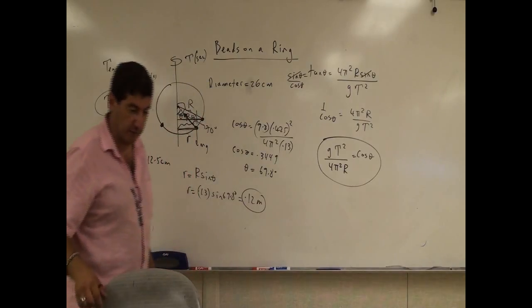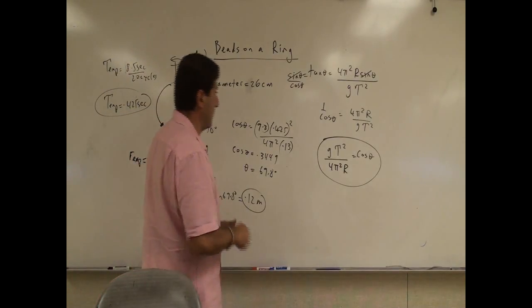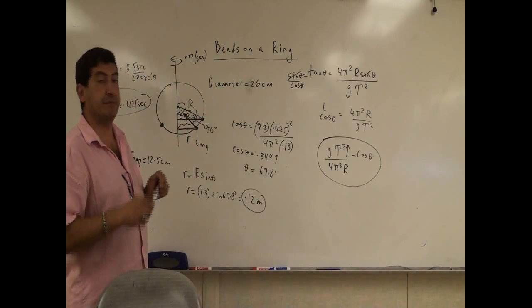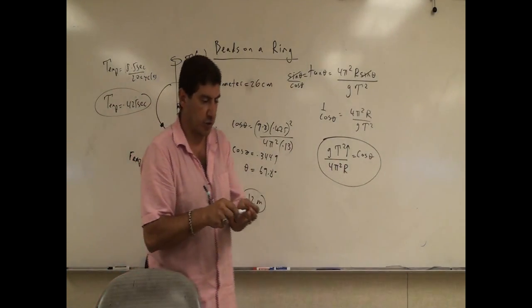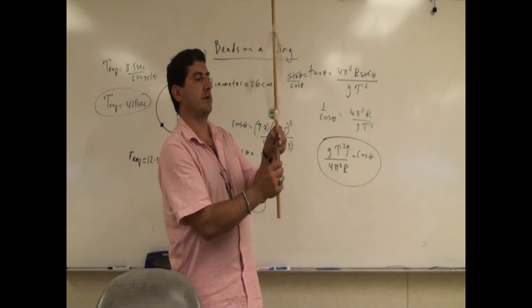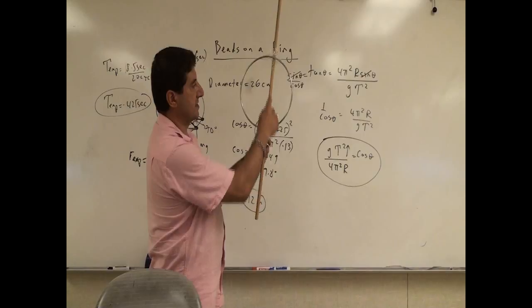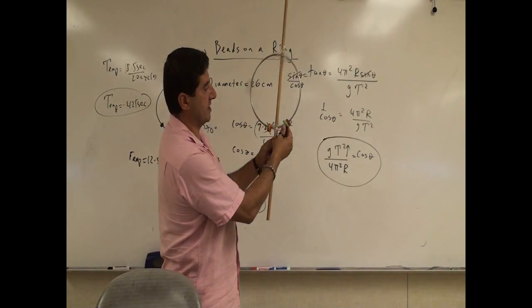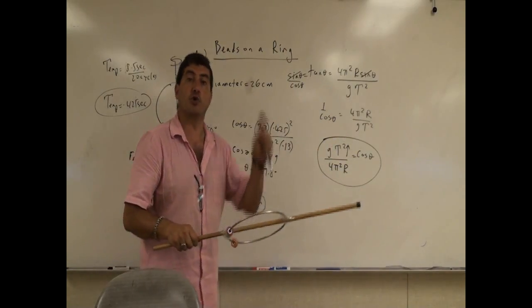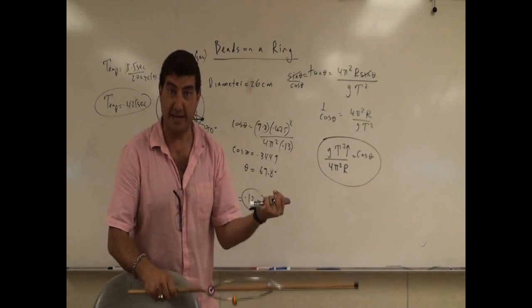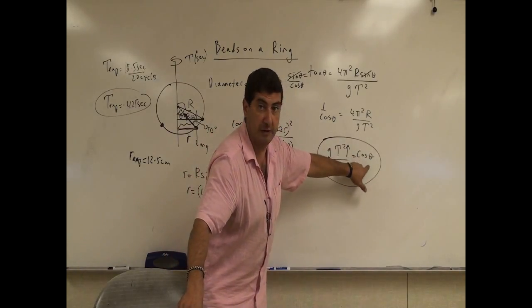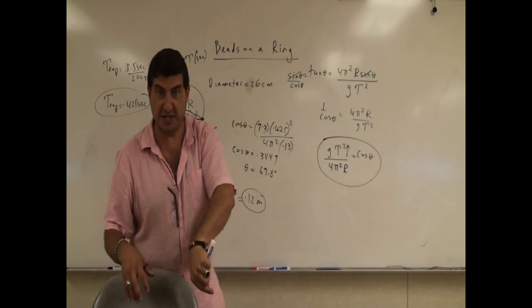So what do we learn from this problem? The bigger the period, if the period is big, what does that mean? Okay, that means you're going slow. It's going very, very slow. So if the period is big, what's going to happen? The angle is going to be very small. Because they're going to be kind of down here. So this angle is going to be small. When the angle is small, the cosine of the angle is big. So when the period is big, cosine of the angle should be big, and that means the angle is actually small, you see?